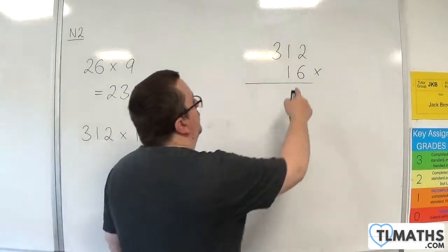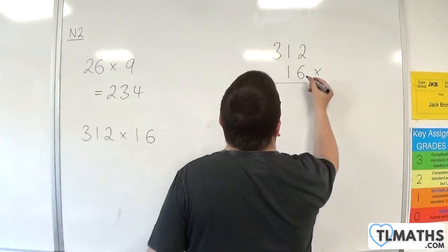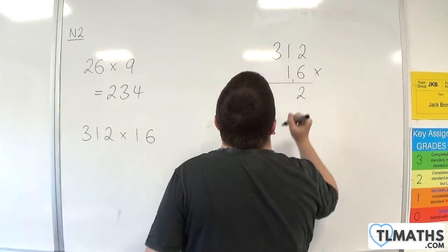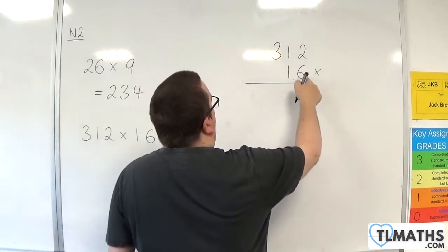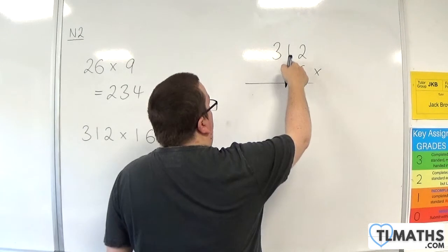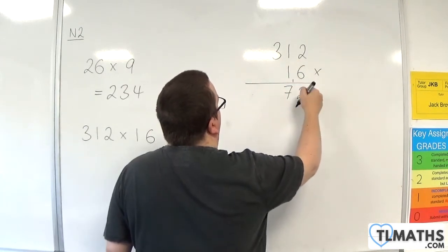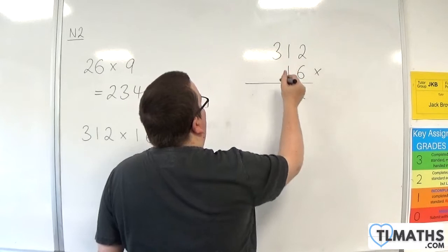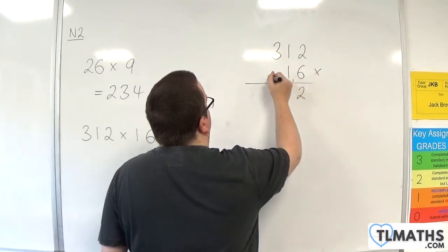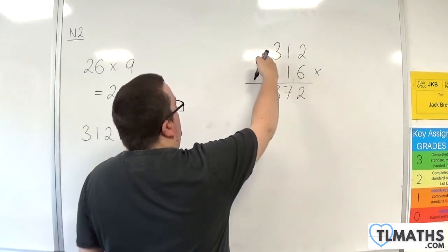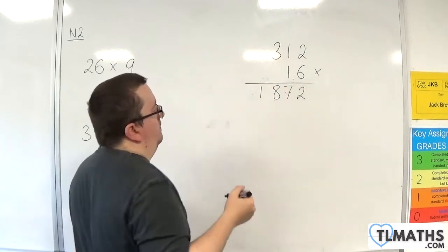So first of all, we've got 6 times 2, which is 12. So put down the 2, carry the 1. 6 times 1 is 6, plus the 1 is 7. 6 times 3 is 18. Put down the 8, carry the 1. 6 times nothing, plus the 1, is 1.